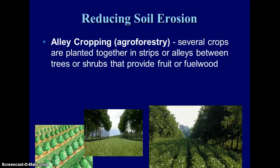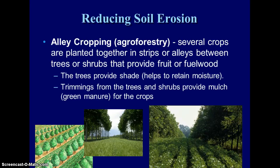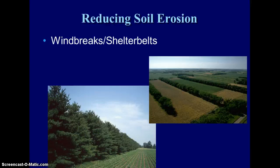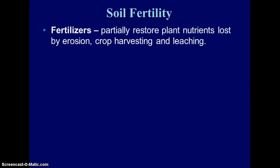Alley cropping or agroforestry uses trees in strips. They provide shade, cutting down on evaporation so you use less water. The trees are usually fruit or firewood trees so they can be harvested. Their trimmings provide natural fertilizer — called green manure — which is plant material used as fertilizer, adding organic material and nutrients to the soil. Building windbreaks or shelterbelts around field edges, usually long rows of trees, cuts down on wind erosion.